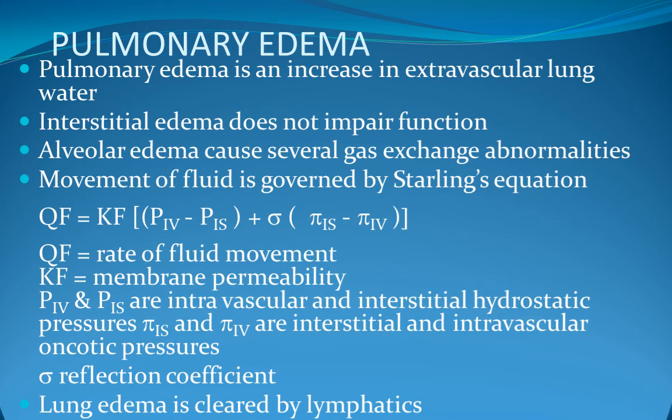Alveolar edema is characterized by bilateral perihilar shadowing, which may be patchy or unilateral. Supporting features such as pleural effusion and septal lines are helpful in reaching the diagnosis but may be absent. The most useful diagnostic feature is a rapid response to treatment within hours, with improvement much faster than other causes of bilateral consolidation. Pulmonary edema may also be seen in hemorrhage or infection.